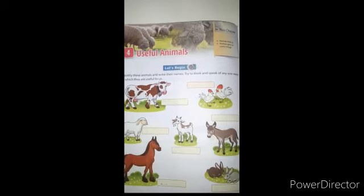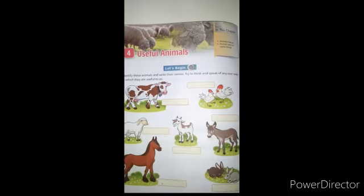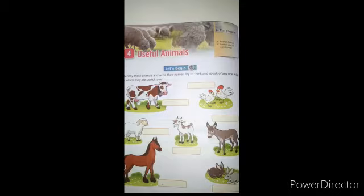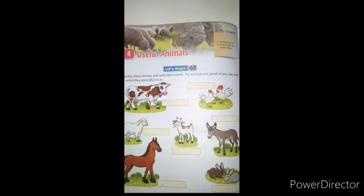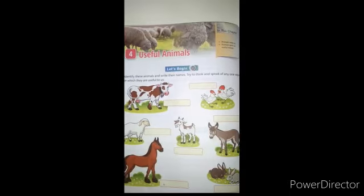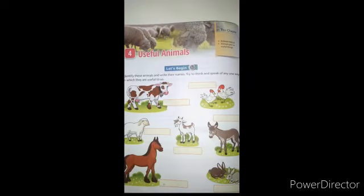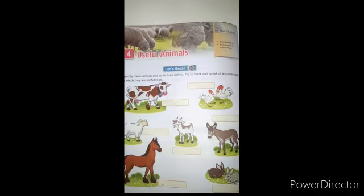We have to identify them and tell one use of them. First, you are looking there, there are two hens. Hen gives us egg and meat. Next, cow. Cow gives us milk. Next, sheep. Sheep gives us wool. Next, goat. Goat also gives us meat.